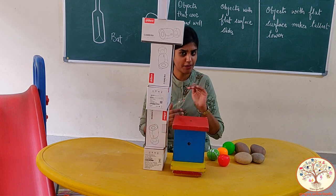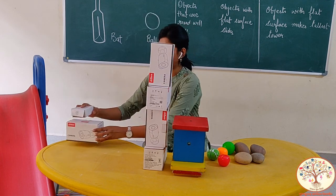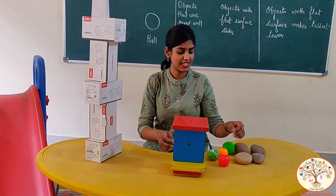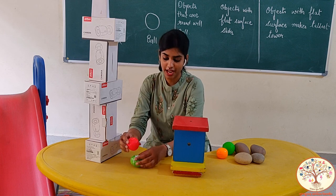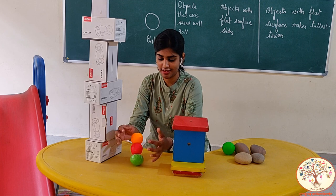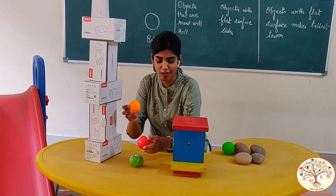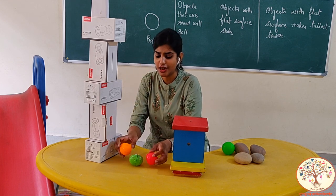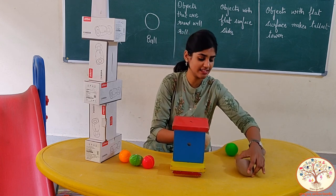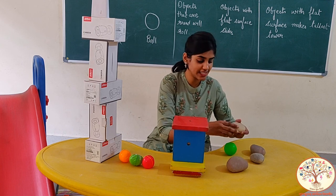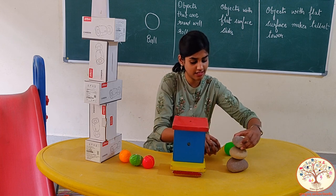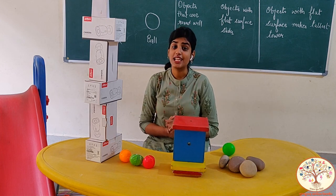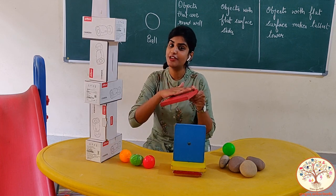It is easy to make the stack from flat surfaces. Now let's try with round objects and compare which one makes the tallest stack. Objects are round — we cannot make a stack of round objects. Let's try once again. No — objects that are round cannot make a stack. Let's try again with pebbles — pebbles have a little round surface, and we cannot make a stack from the round surface.